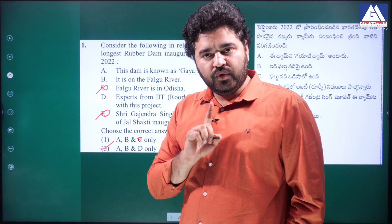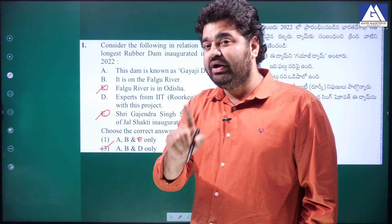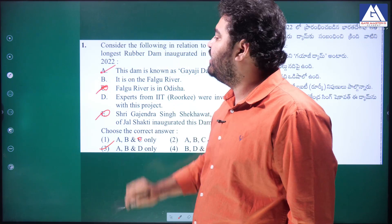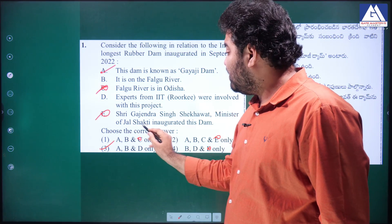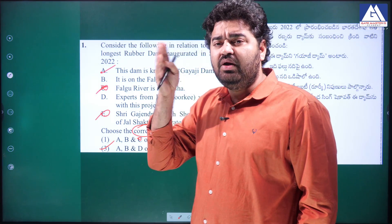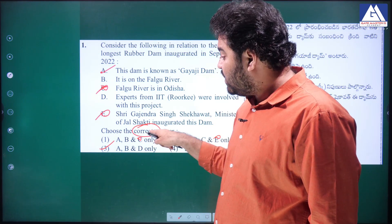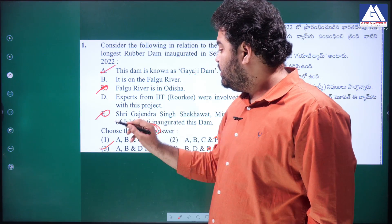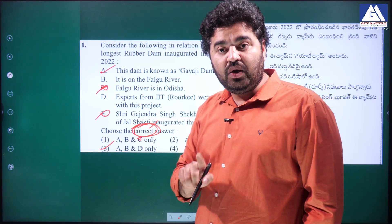While reading statement-based questions, as soon as you identify a statement as wrong, immediately mark it wrong and move on. Similarly, if a statement is clearly correct, mark it right immediately. Be very careful about whether the question asks you to choose the correct statements or the incorrect ones — students often lose marks here by confusing correct and incorrect options.